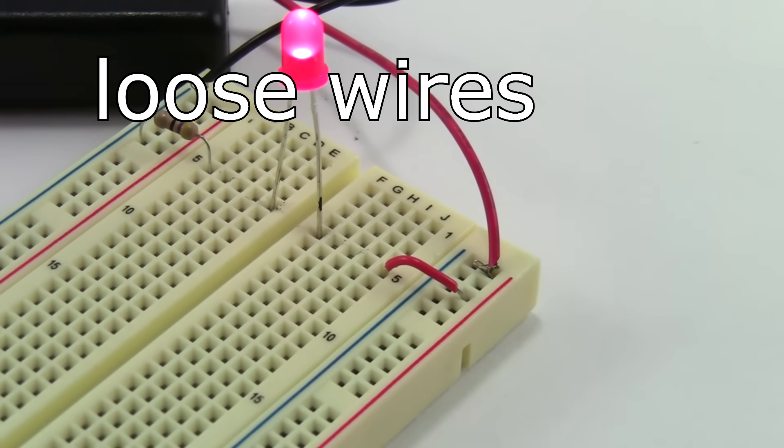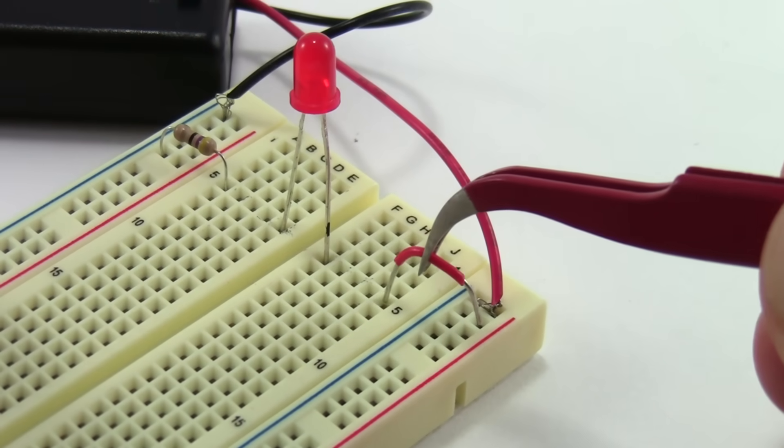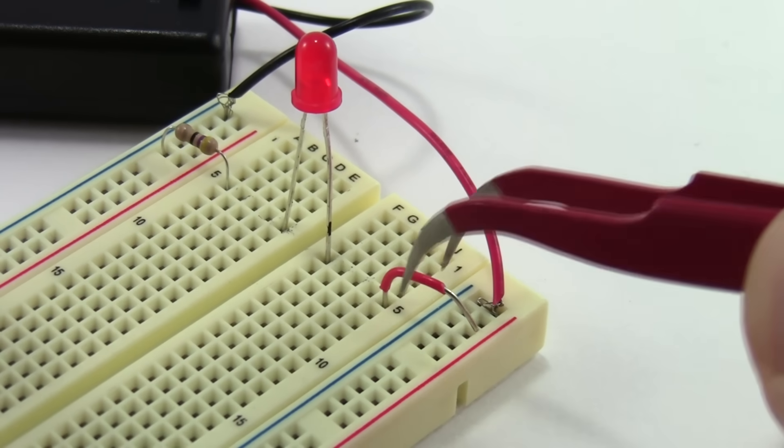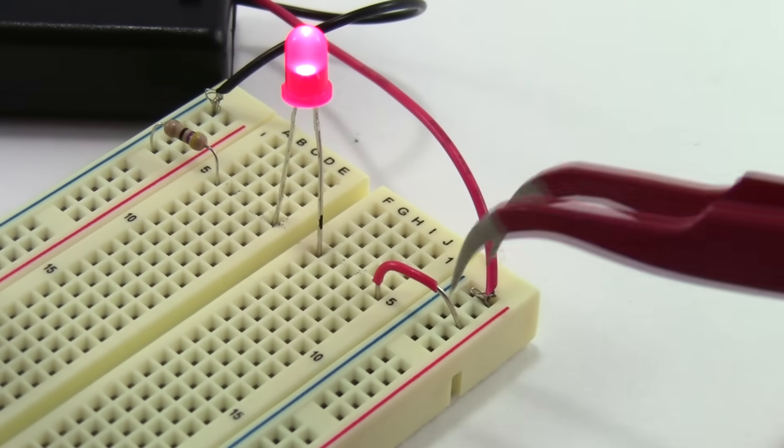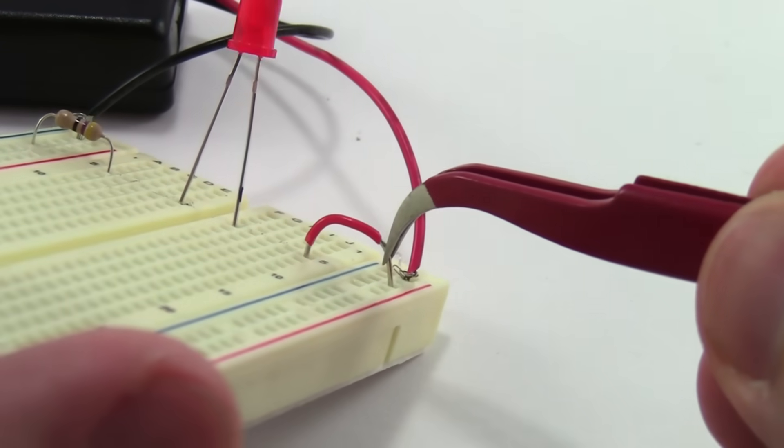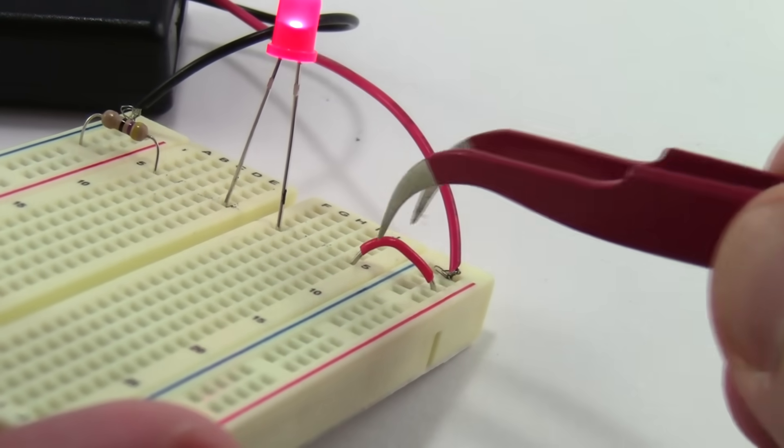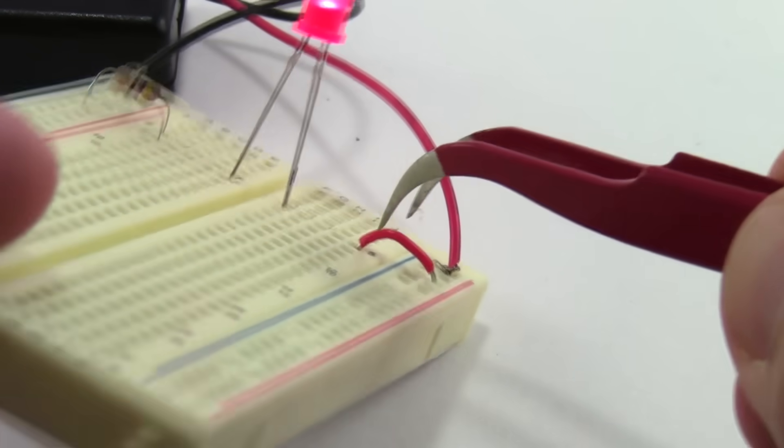Another common mistake is not firmly pushing leads or wires into the breadboard all the way. Watch what happens if I pull this jumper wire out slightly so the connection is loose. The LED will still light up intermittently, but bumping the wire or shaking the breadboard can easily make the LED go out. To make sure the connection stays secure, you have to make sure the jumper wire is pushed firmly into the breadboard on both ends.